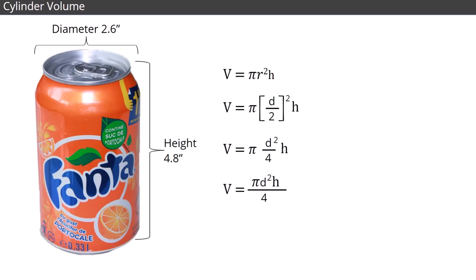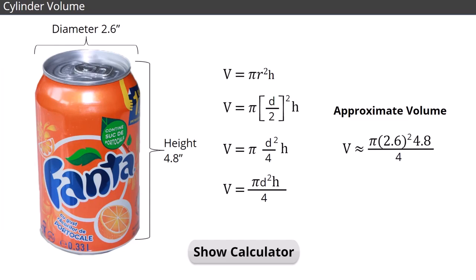In this example, we're only finding the approximate volume of the soda can, since the top and bottom of the can are tapered. If we work this problem, the volume is approximately 25.48 cubic inches.